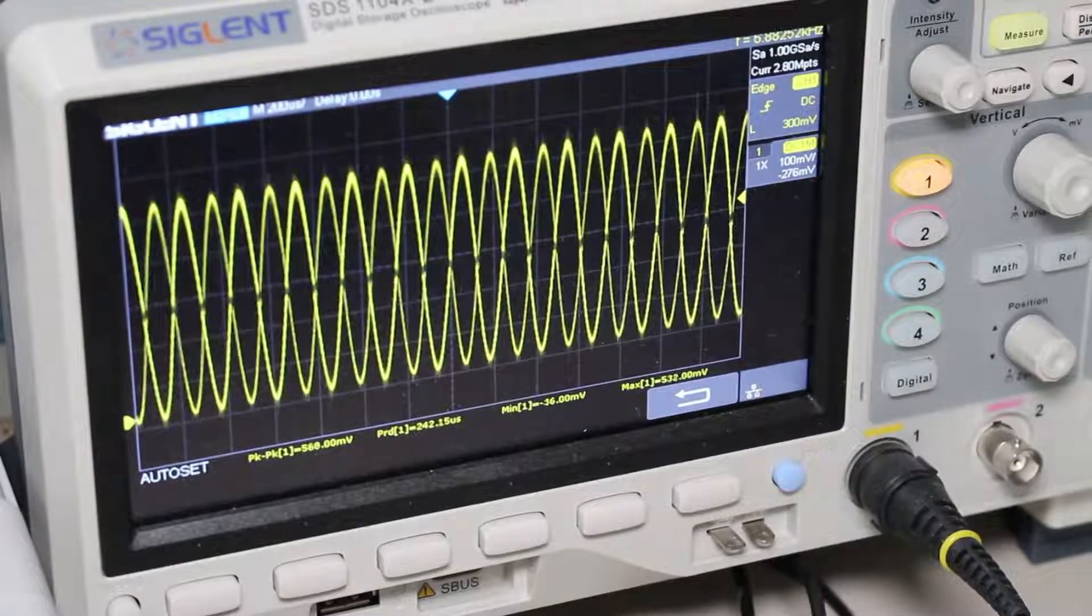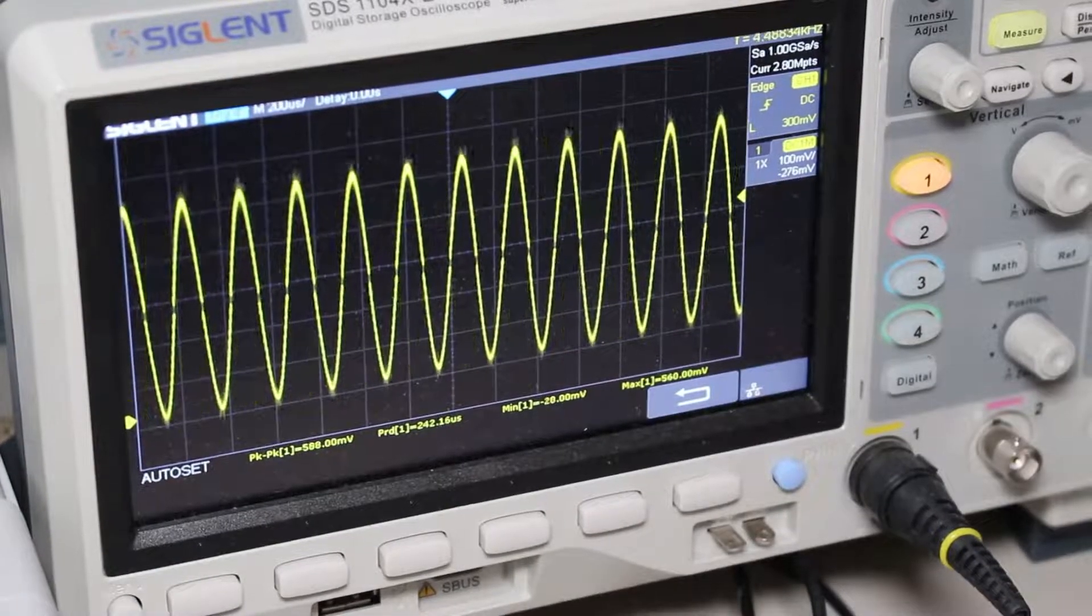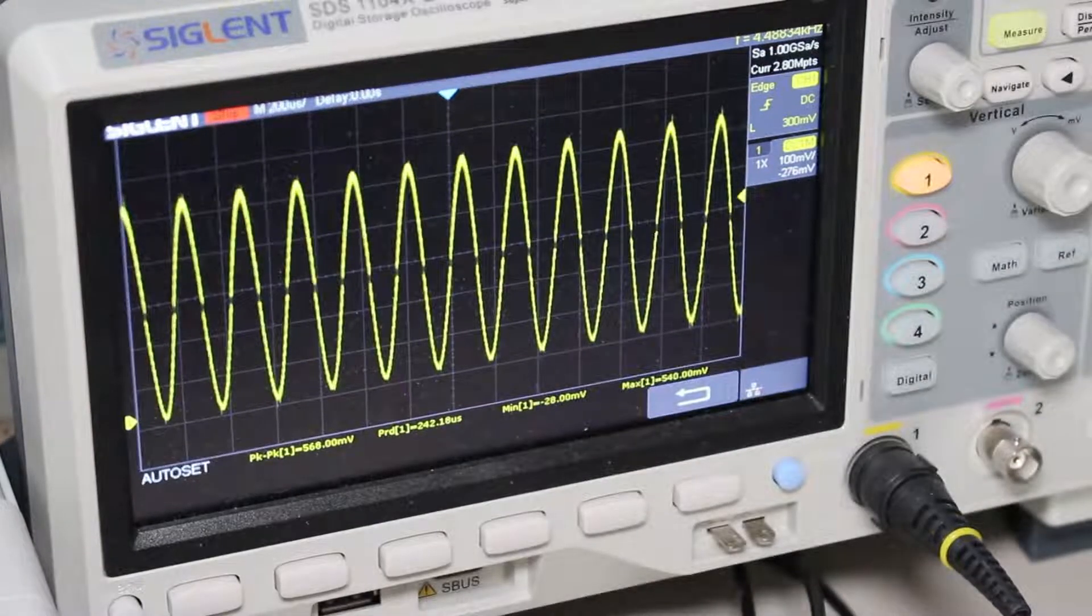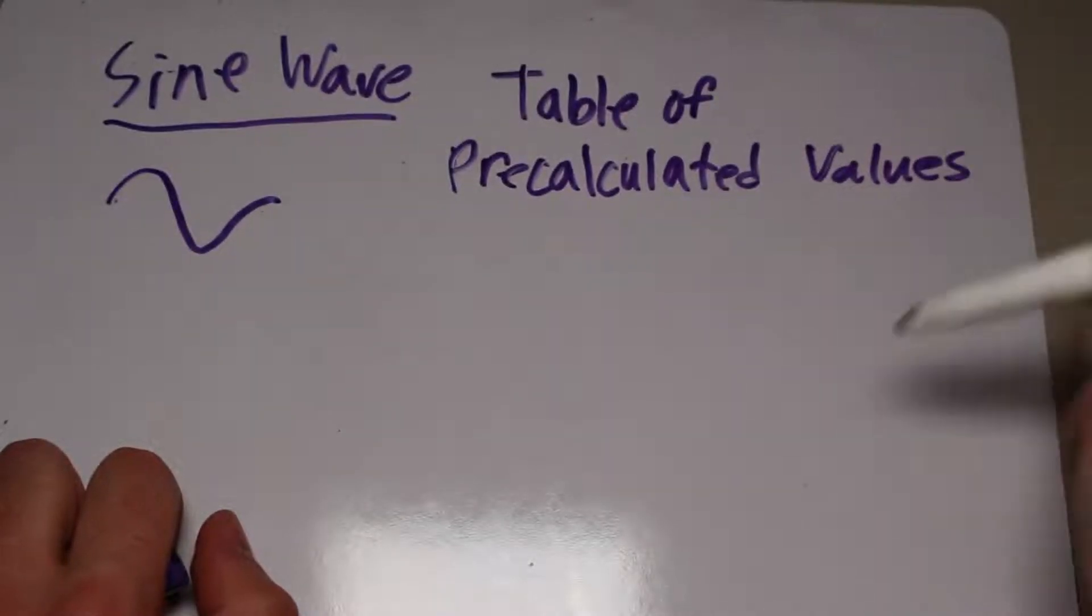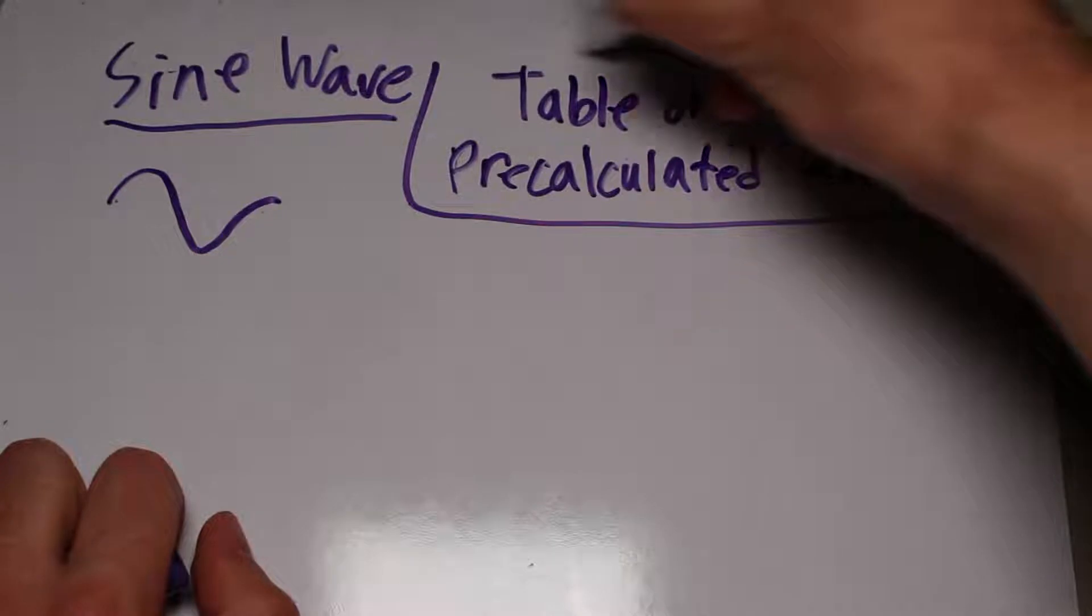Finally, I had one more function to generate, and the channel is named after it in fact, the sine wave. Now this wave was more difficult to generate than the others because we needed to run some trigonometry. To make this easy for the AVR to run, I precalculated a table of sine values on my PC.